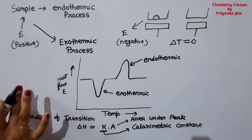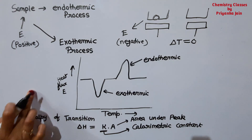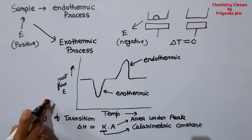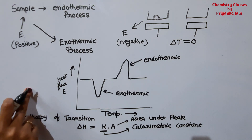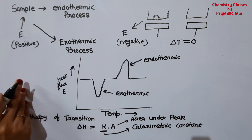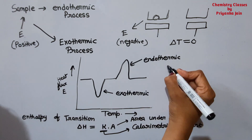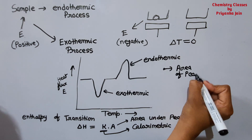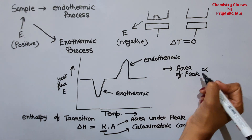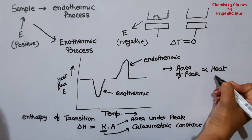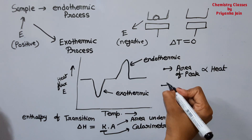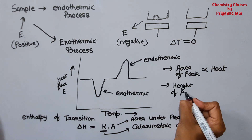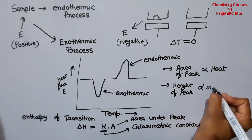Two things to remember: first, the area under the peak is directly proportional to the heat absorbed or heat evolved. Second, the height of the peak is directly proportional to the rate of the reaction.